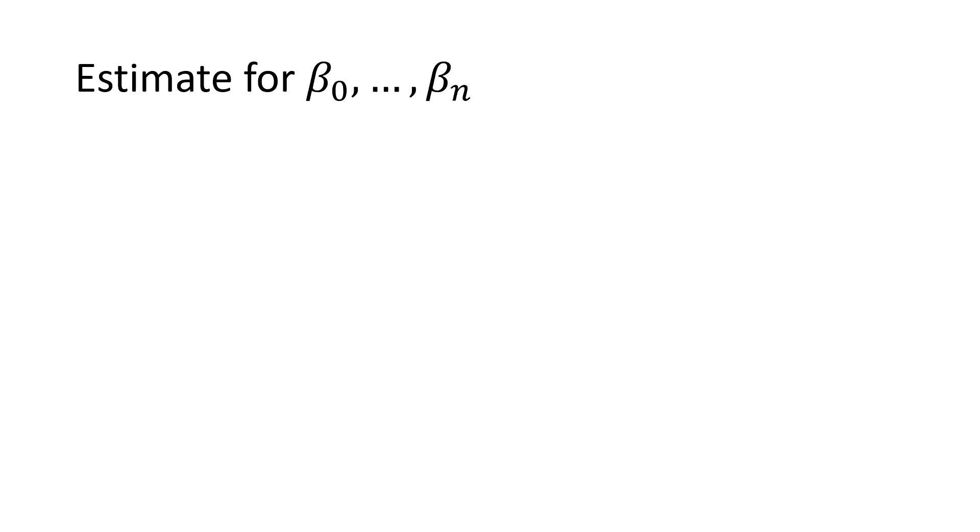Alright, now we know everything to define the estimate for the betas. We choose our estimates such that the sum of squared residuals is minimized. So in the last example the estimates would be the parameters that correspond to the blue function. Of course, this is only an implicit definition of the estimates and not an explicit way to calculate them, but I think it is enough to get an intuitive understanding of what is going on. To clarify the notation, it should be mentioned that the hat symbol above the betas is added to distinguish the estimates from the true unknown parameters.